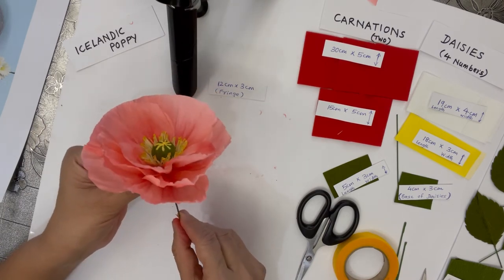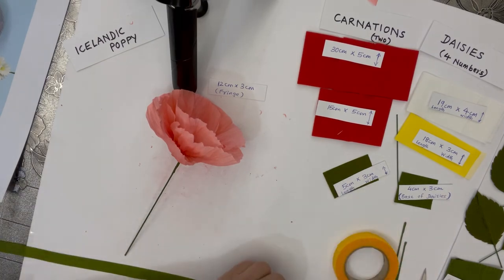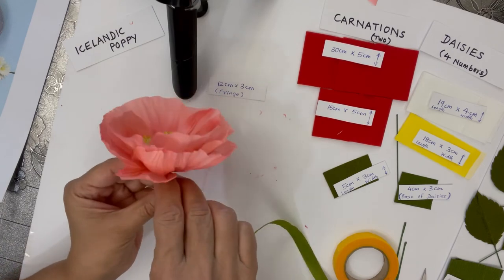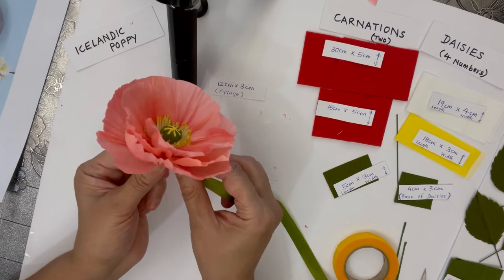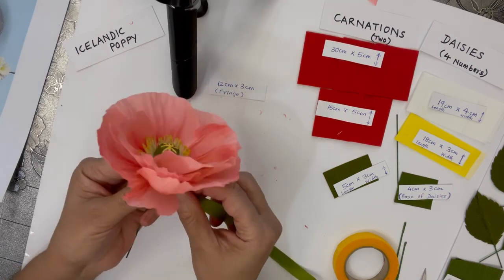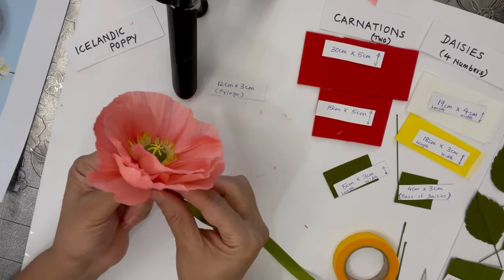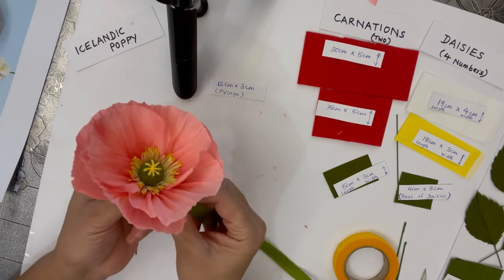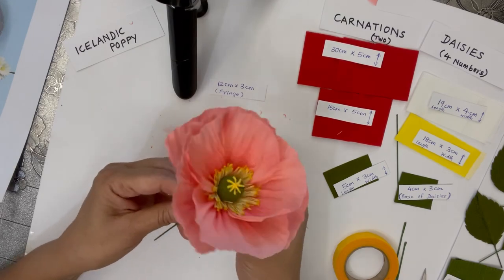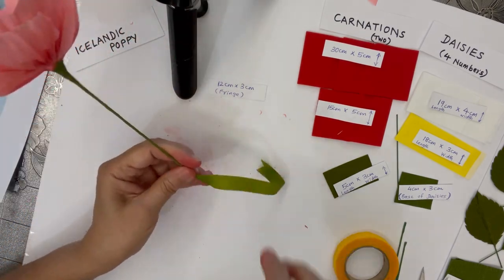Once you're satisfied with the kind of flower you've made, you can use the green floral tape to cover the floral wire and the base. To use the floral tape, always stretch it a little bit and then turn it around the base, holding it tightly. Turn the flower as you're putting the tape. Turn it around and stretch it when you're putting it, otherwise it won't stick properly. Once you're satisfied, you can turn it and put the tape across the whole wire.